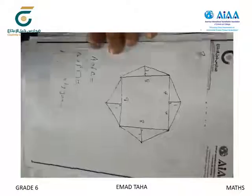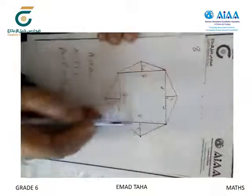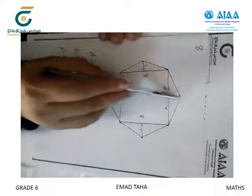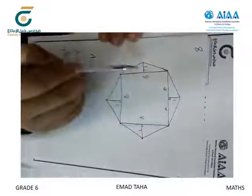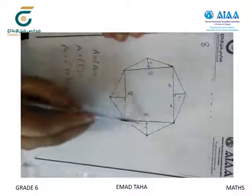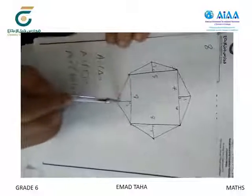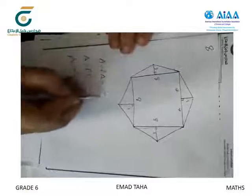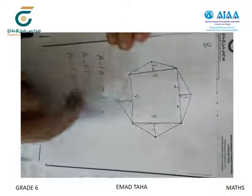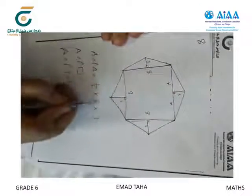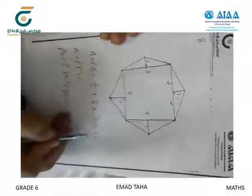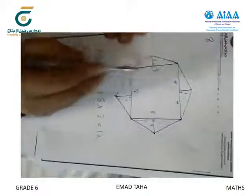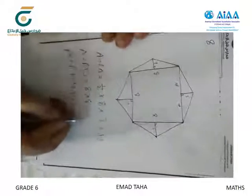The last one, number 8. Here we have a square in the center and four triangles. Each triangle has height 3 and base 8. Since the four triangles are equal, if we find the area of one triangle we can find the area of all four. Area of one triangle equals half times base times height: half times 8 times 3 equals 12. Area of square equals 8 times 8 equals 64.